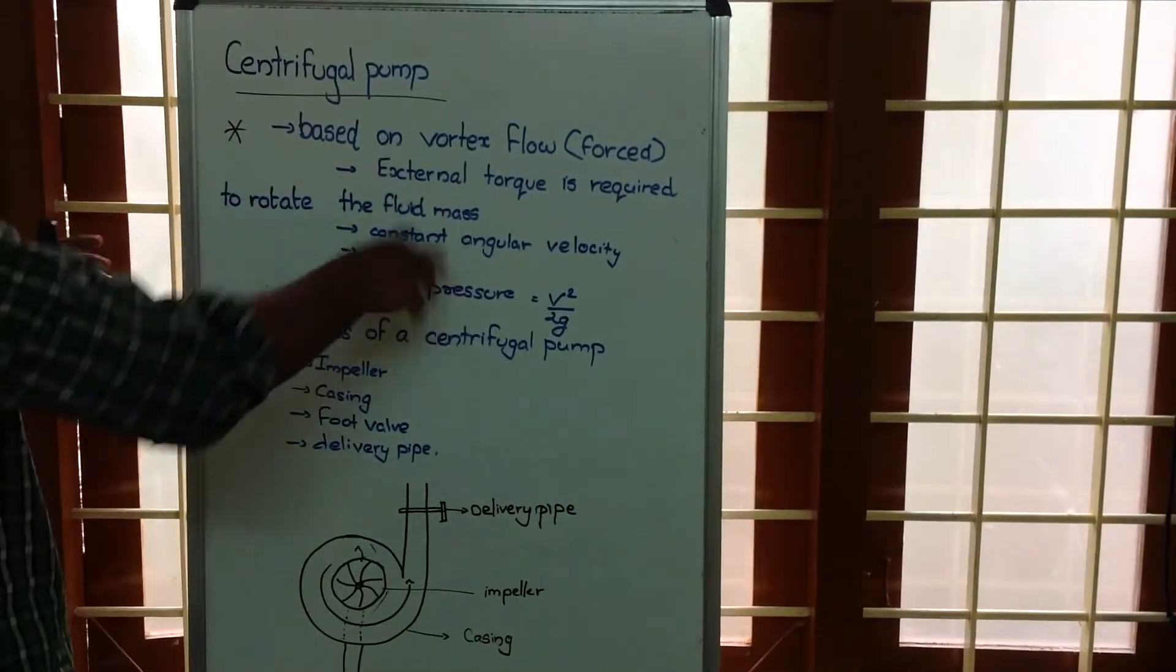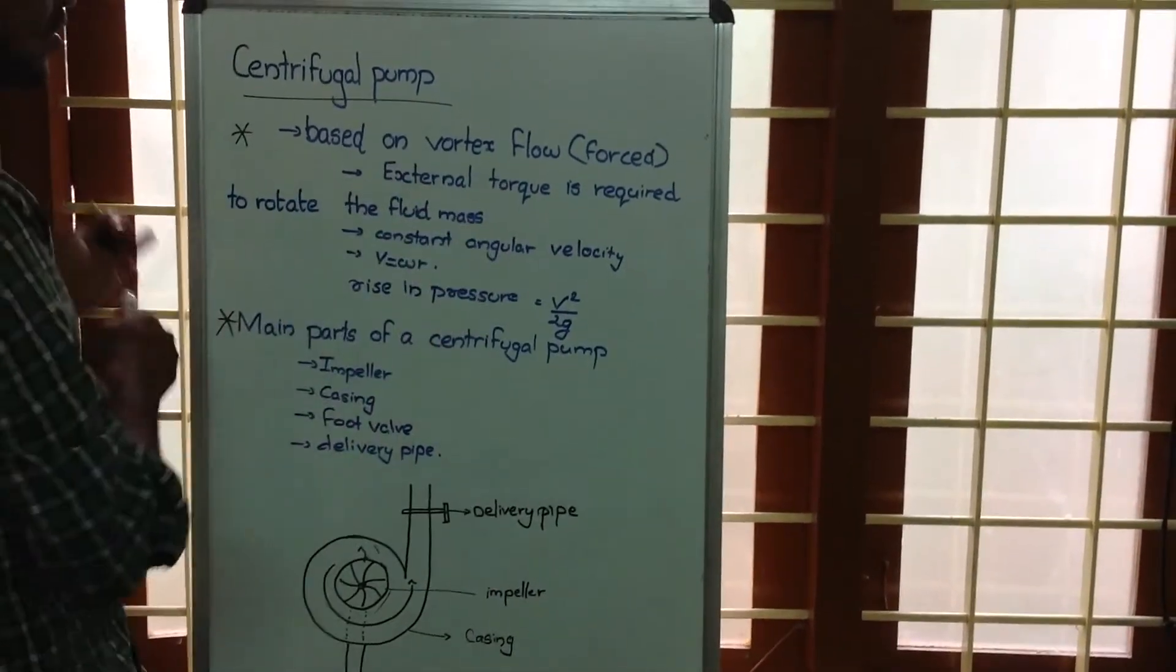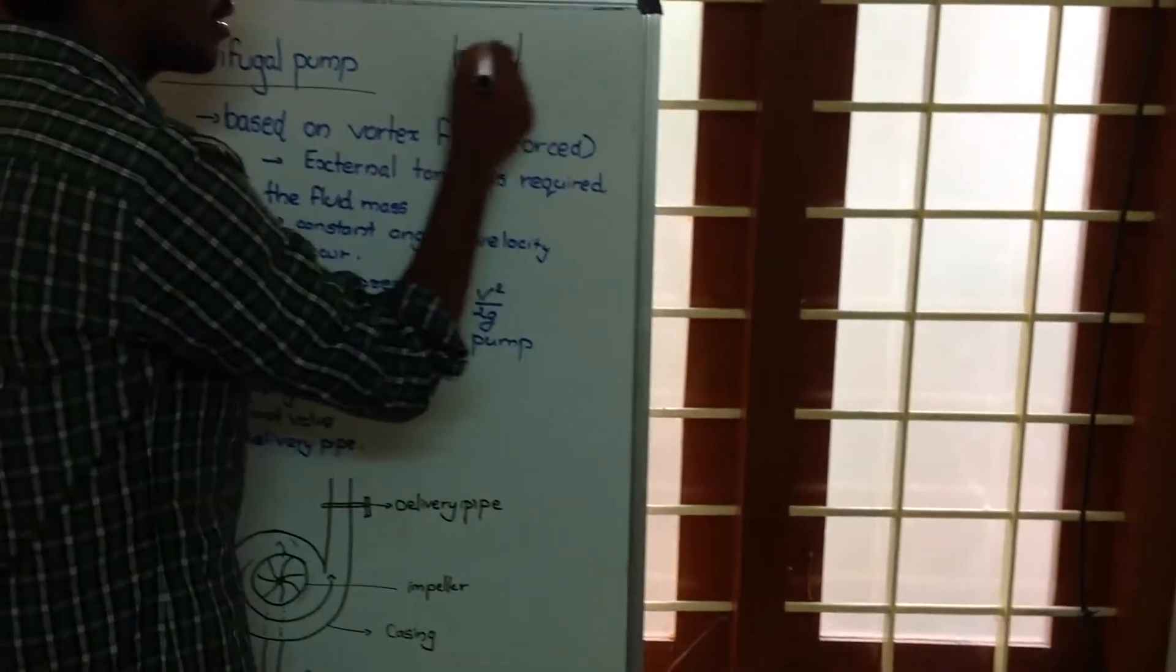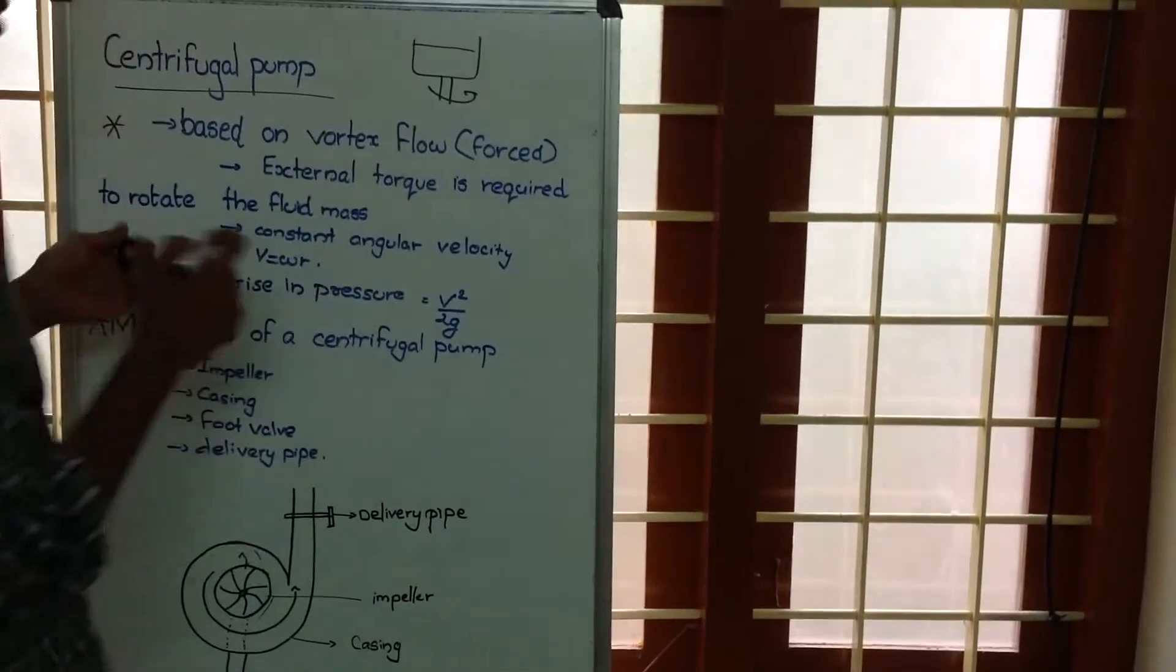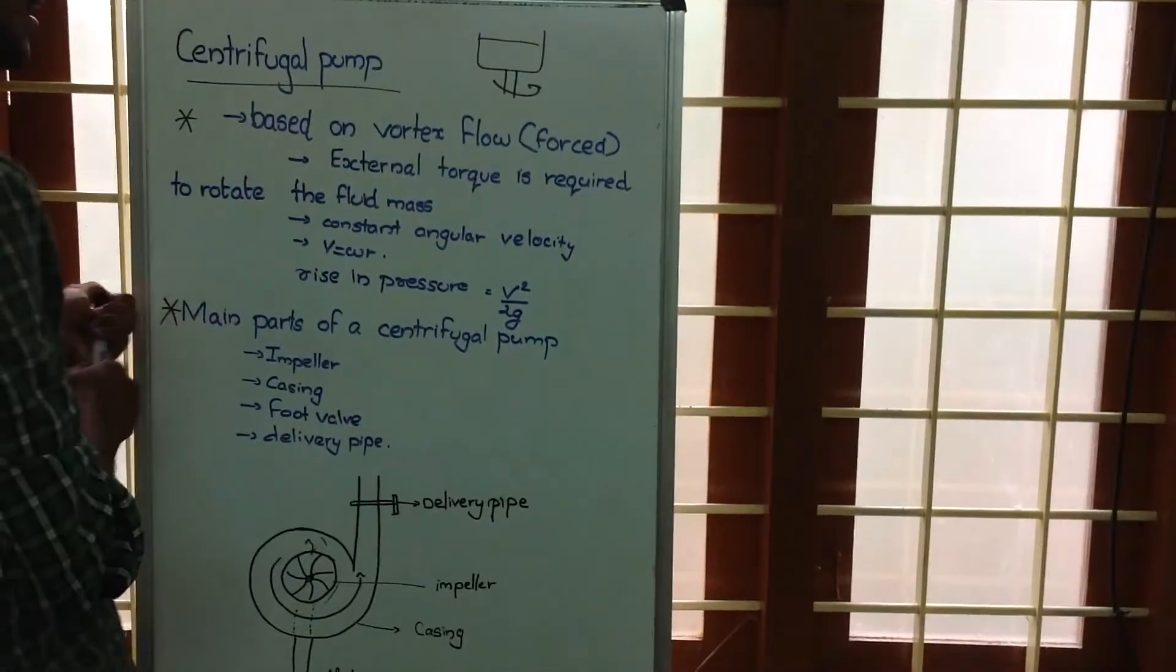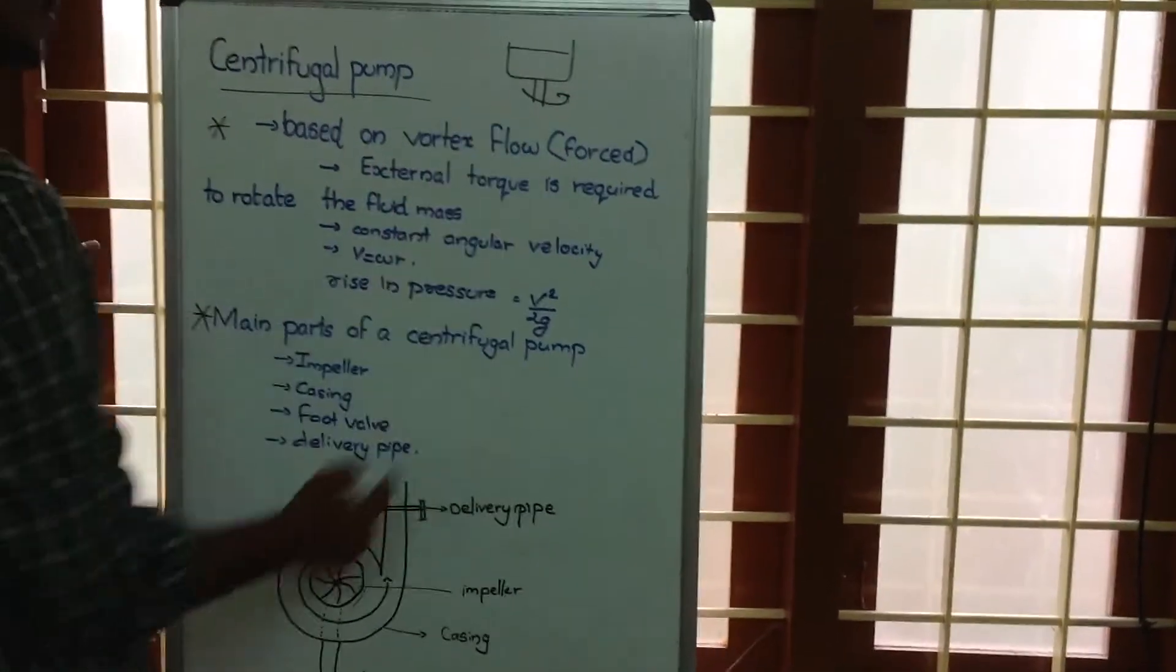So in forced vortex flow, an external torque is required to rotate the fluid. There will be some fluid in vessel and we will be forcing this vessel to rotate such that this fluid itself is having a rotation and that can be called as a forced vortex flow.